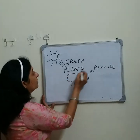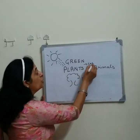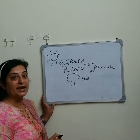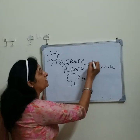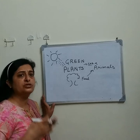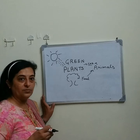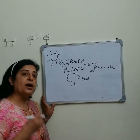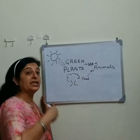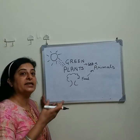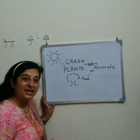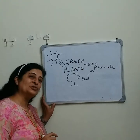Green plants need carbon dioxide gas for the process of photosynthesis. And this carbon dioxide gas they take from the animals. Animals and human beings, during the process of respiration, exhale carbon dioxide gas. They give out carbon dioxide gas, and this carbon dioxide gas is absorbed by the green plants for the process of photosynthesis.